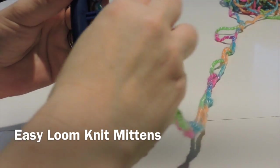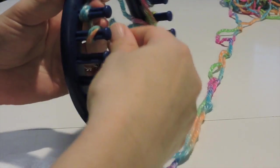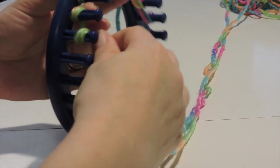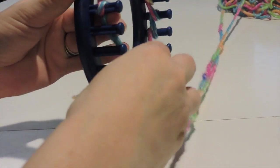We're going to start by making a slipknot at our anchor peg, then we're going to use the casting method of an E-wrap cast-on, so we'll want to make little E's on each peg all the way around the loom.